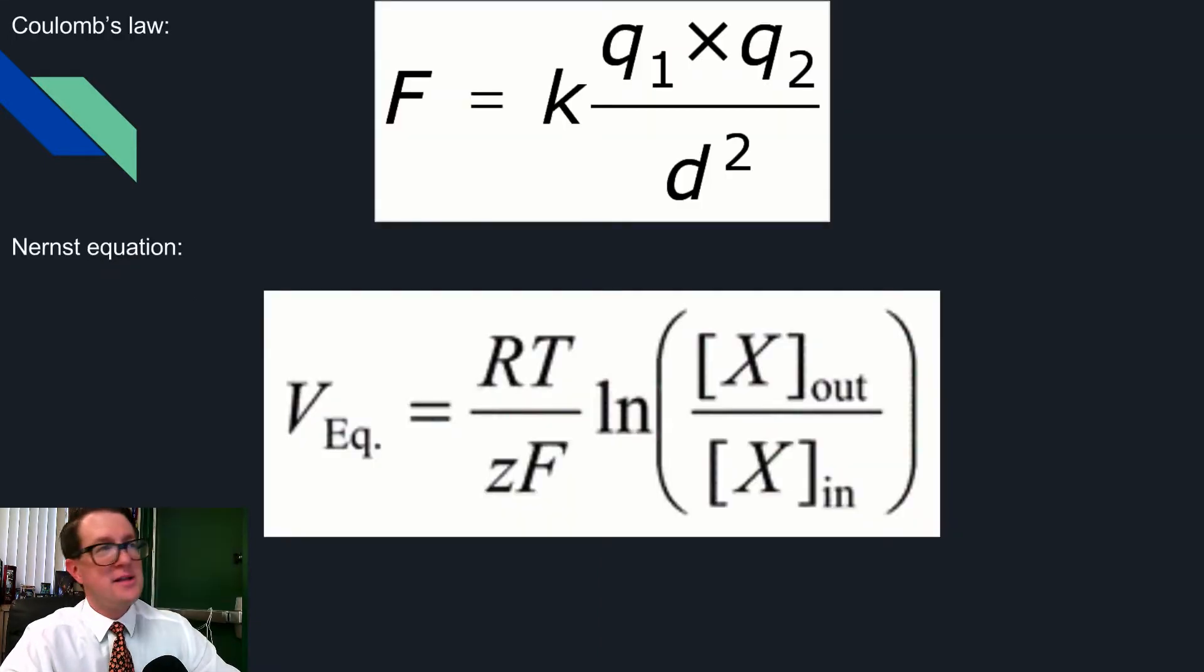Looking at it mathematically, the top equation is Coulomb's Law. The bottom one is the Nernst equation, a result of Coulomb's Law. The Nernst equation generates what we call a potential. Potential is the chemical version of being able to do something, being able to do work, or chemical potential in this case.